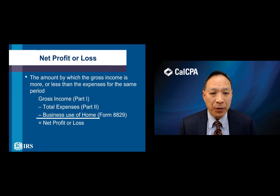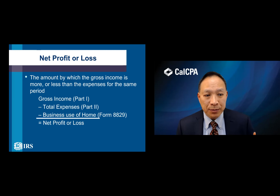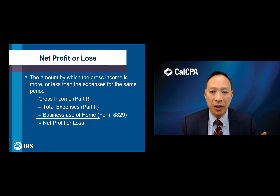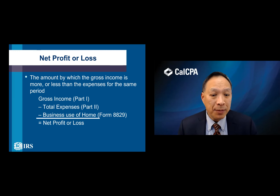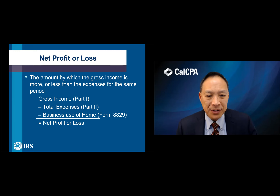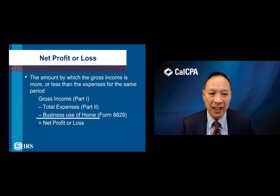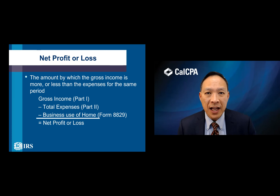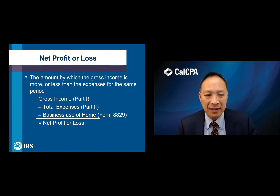The net profit or loss is the amount by which gross income is more or less than expenses for the same period. You start with Part 1 gross income, minus total expenses from Part 2. If you work from home, the business use of home reported on Form 8829 is also deducted, giving you your net profit or loss — and that's the amount you pay taxes on.